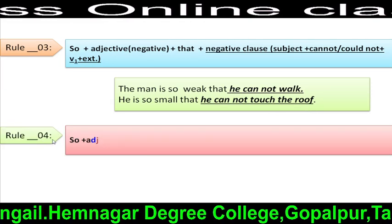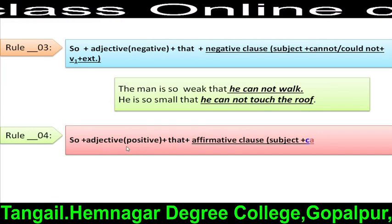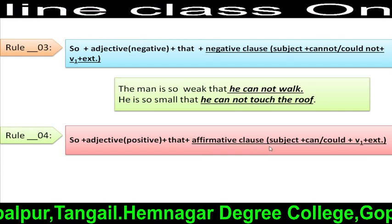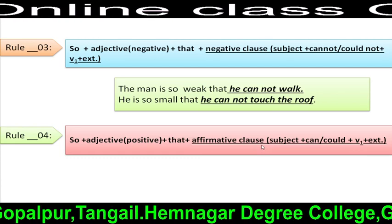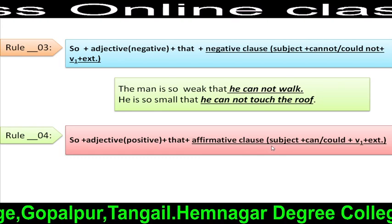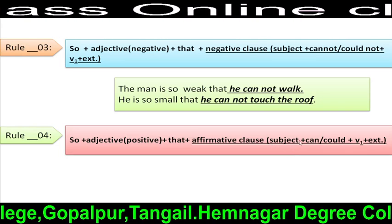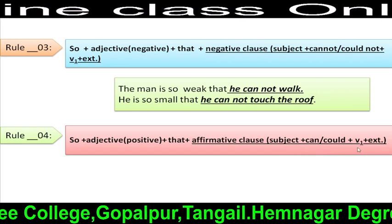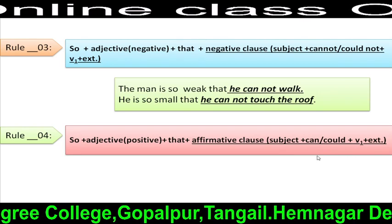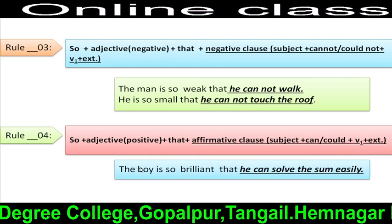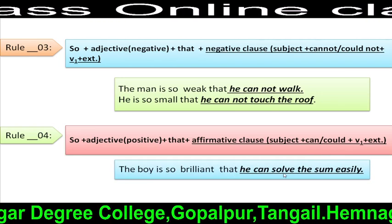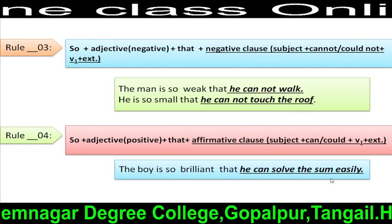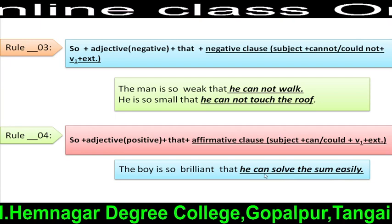Rule 4: So + adjective (positive sense) + that + affirmative clause. In an affirmative clause, we generally use: subject + modal verb (can/could/may/might) + V1 + extension. For example: 'The boy is so brilliant that he can solve the sum easily.' Here, 'he can solve the sum easily' is the affirmative clause.